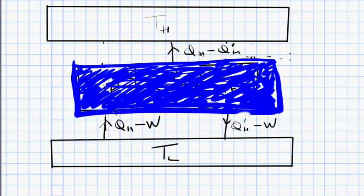On the cold side, we have QH coming into our blue box. We've got QH prime going out. Actually, we've got QH minus W, QH prime minus W. If we combine those, the W's cancel out. And we've got a net heat transfer of QH minus QH prime.